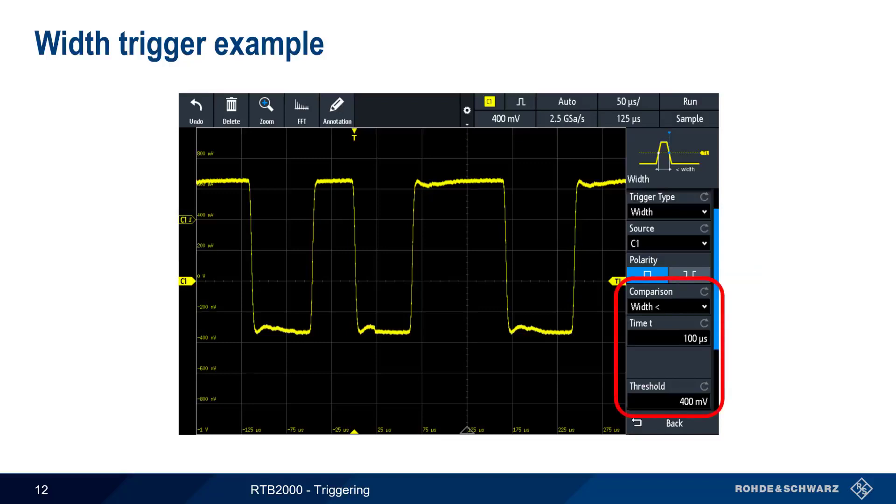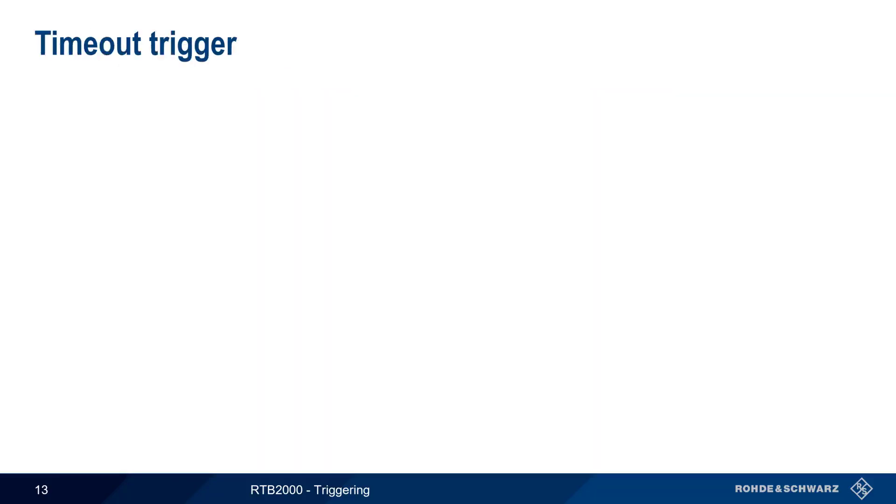In this example, we're triggering on pulses less than 100 microseconds long. With a width trigger set to 100 microseconds, the RTB doesn't trigger until it sees the shorter 50 microsecond pulse shown here. Don't forget to set an appropriate threshold value, here 400 millivolts. Setting an improper threshold value is the most common cause of problems when using a width trigger.